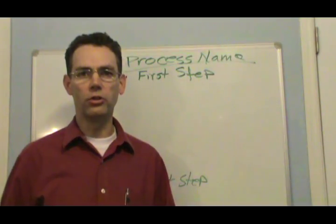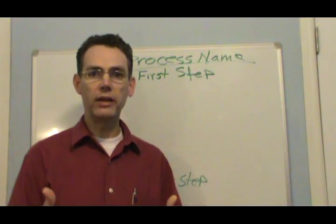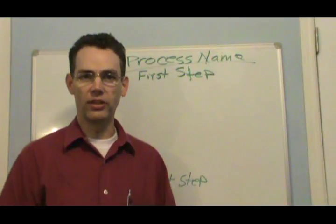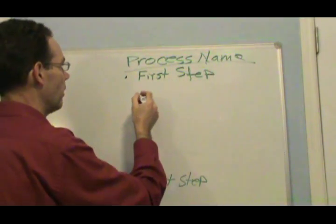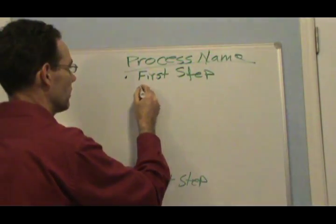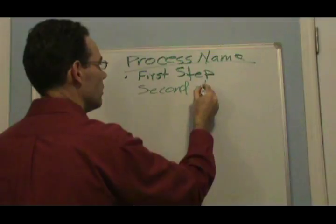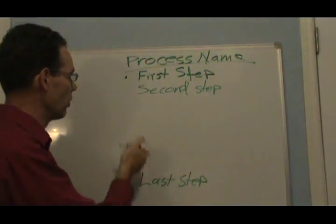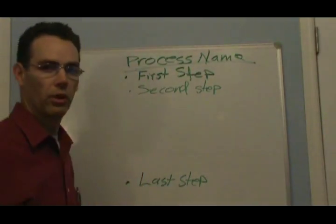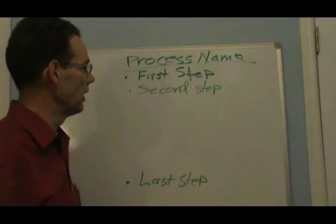The next thing you want to do is basically act like I am there looking over your shoulder and you're going to explain to me what this process is. You're just going to start with the first step, write it out, and then write down what the second step is. Just list it out in a bullet format, like you're talking to me. Just write it down first to last.